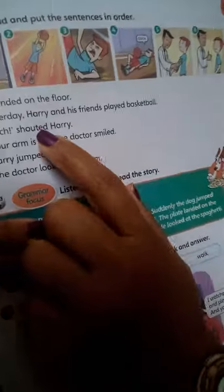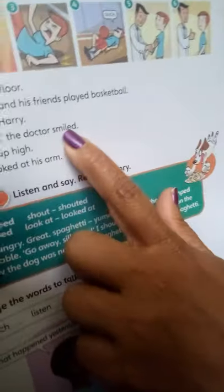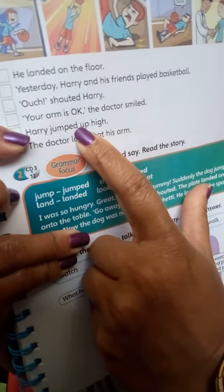Over here we have 'shouted.' The verb in the present is 'shout,' which means 'gritar,' and in the past it's 'shouted.' Then 'smiled' — notice that 'smile' ends with the letter E, so to form the past we only add the letter D. 'Jump' in present means 'brincar,' and 'jumped' is the past. The doctor 'looked' — 'looked at his arm,' meaning 'el doctor miró su brazo.'